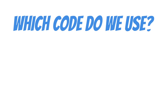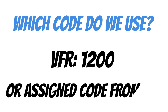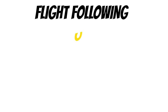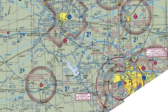So which code do we need to use? Under normal visual flight rules, we need to be squawking 1200. Or you could get a transponder code assigned from ATC, and they would give it to you if you were getting services like flight following, or if you were in Class Bravo, Class Charlie, or in a TRSA — basically busy airspace where ATC is watching you on radar.